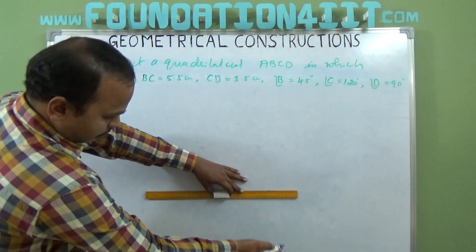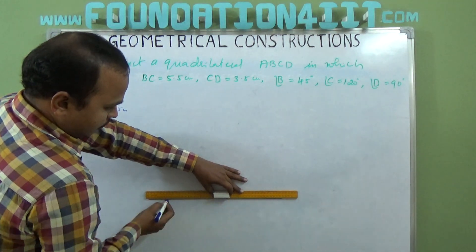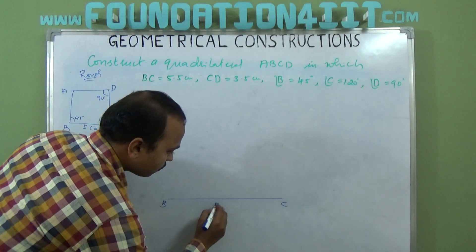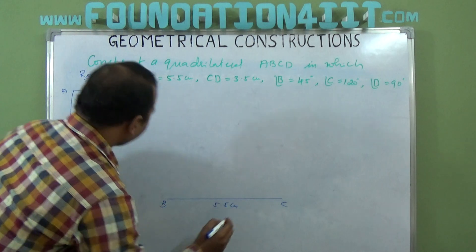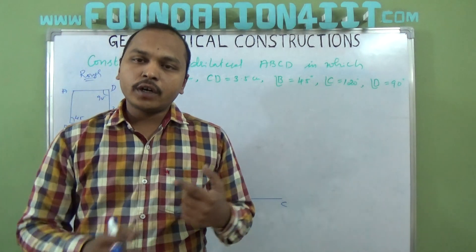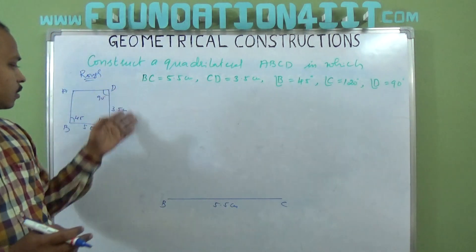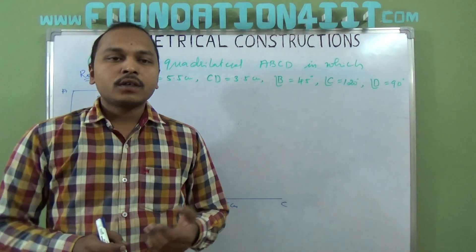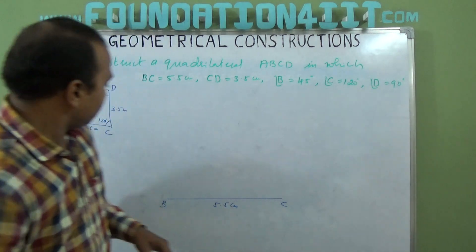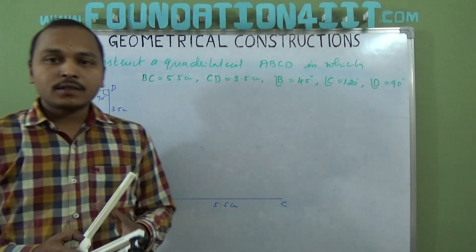BC = 5.5 centimeters. B and C, 5.5 centimeters. So two angles, whichever two angles are included, any line segment you can take. I'm taking here BC = 5.5 centimeters. Next, angle B = 45° and angle C = 120°.